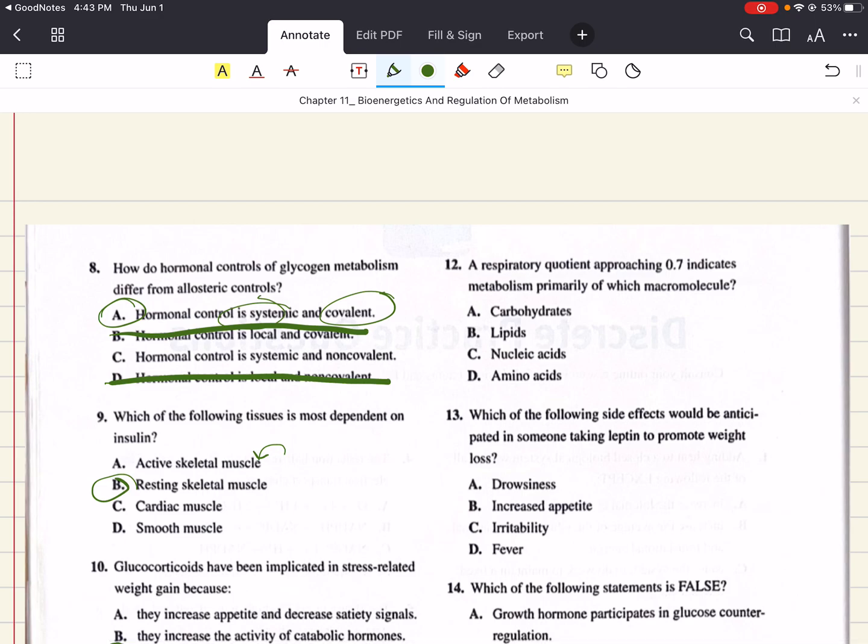12 says, a respiratory quotient approaching 0.7 indicates metabolism primarily of which macromolecule. So this is something we didn't cover in the review, but we'll talk about it now. Respiratory quotient gives an indication of the primary fuel being utilized. An RQ around 0.7 indicates lipid metabolism. 1 of 0.8 to 0.9 indicates amino acid metabolism. And 1 indicates carbohydrate metabolism. And so we're talking about 0.7, that's going to be lipids. And so 12 is B.